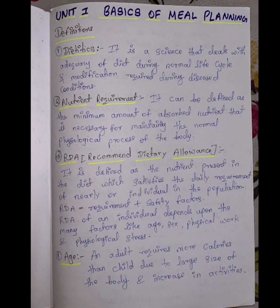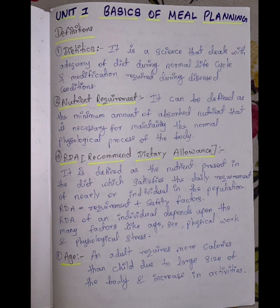Adequacy of diet during normal life cycle and modifications required during disease conditions. Nutrient requirement can be defined as the minimum amount of absorbed nutrient that is necessary for maintaining normal physiological processes of the body. RDA — Recommended Dietary Allowance — is the average daily level of intake sufficient to meet the nutritional requirement of nearly every individual in the population.